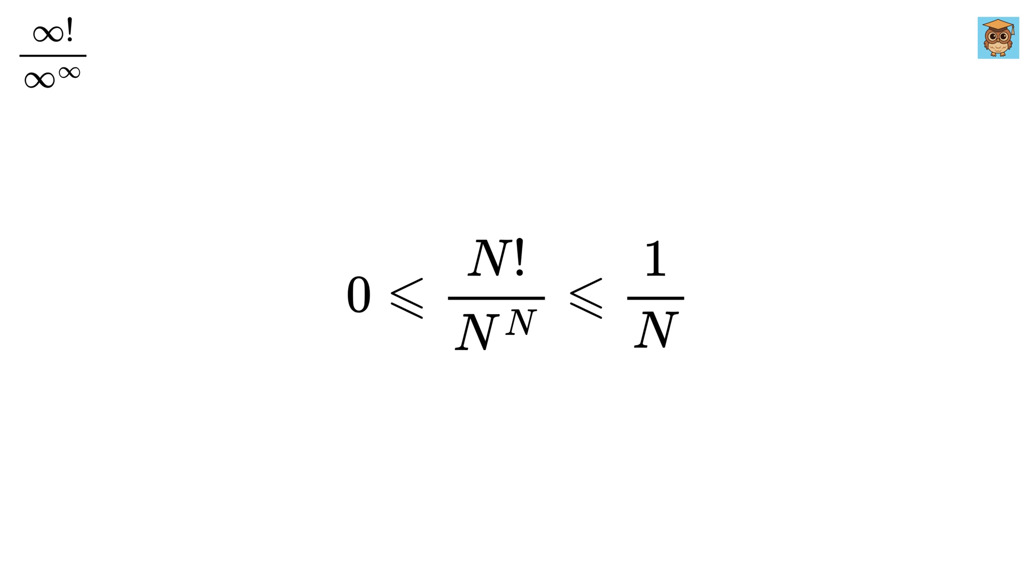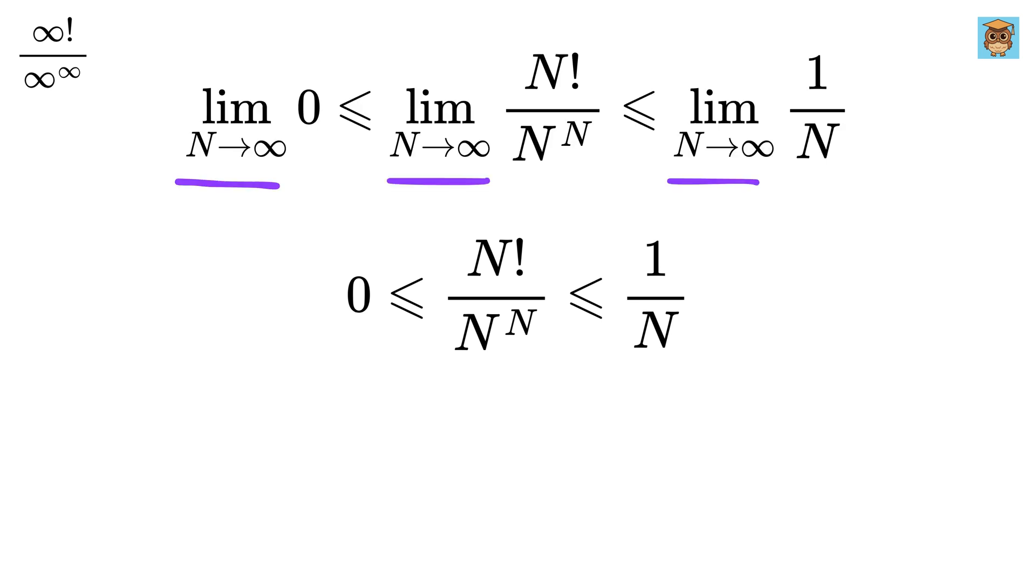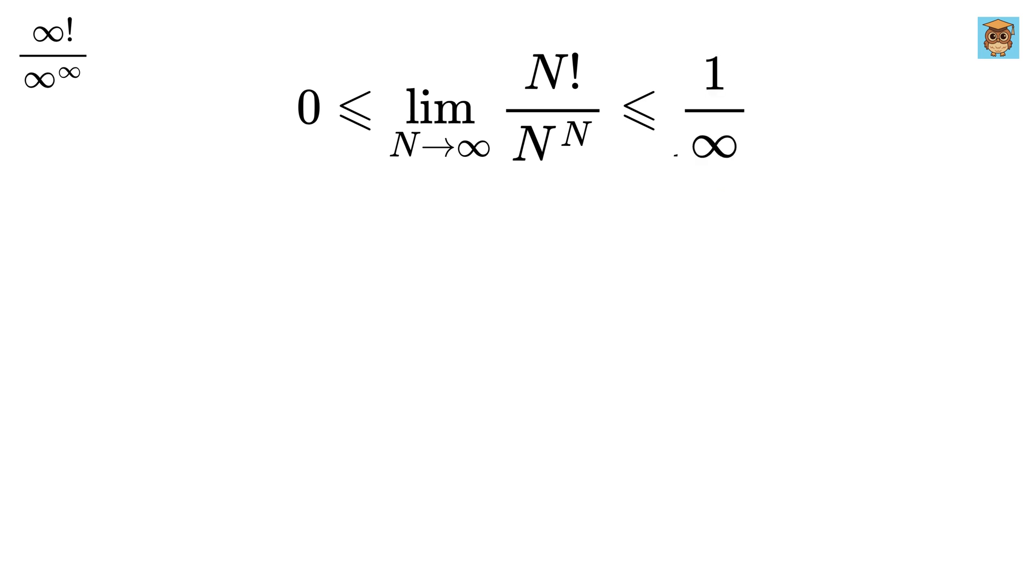Now, on all three sides, let us apply the limit as n tends to infinity. This value will be 0, and this will become 1 over infinity, which is none other than 0. So, our this limit is both greater than and less than or equal to 0, and thus this limit itself will be equal to 0.